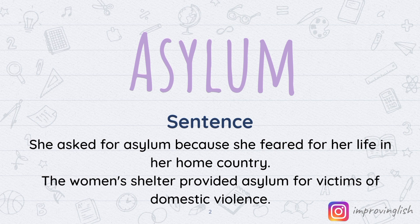The next sentence is: 'The women's shelter provided asylum for victims of domestic violence.' Domestic violence is when you get physically hit or abused by someone you know or are related to, such as your spouse. The women's shelter is a place where women are provided shelter — asylum — if they are going through a bad situation at home or are not safe from people they are related to.